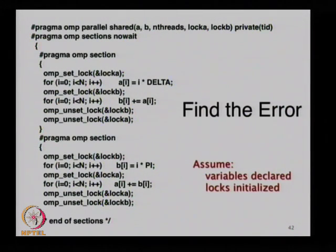As many of you have figured out, there can be a deadlock, because one thread locks A and then B without releasing A, and the other locks B and then tries to lock A. So if this thread locks A while this thread has lock B, then both of them are waiting for each other to release the lock they have acquired.